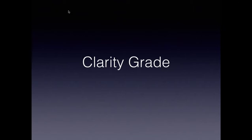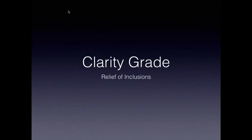Let's talk about clarity grade. We're not really going to talk about how you get a VVS1 or VVS2, but we're going to discuss relief of inclusions. We are all aware of the five parameters which influence the clarity grade of a diamond: the nature of the inclusion, the size, the position, the number, and the relief of the inclusion. Here we're talking about lower grades like SI and I1, where the relief of the inclusion makes a big difference.